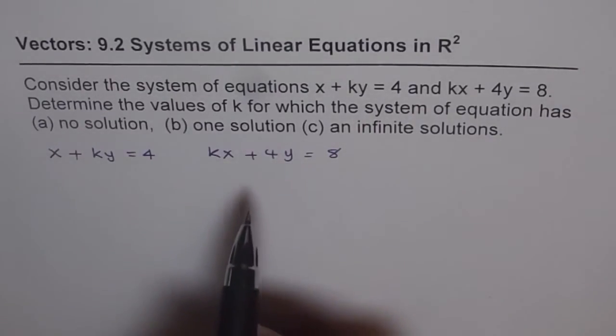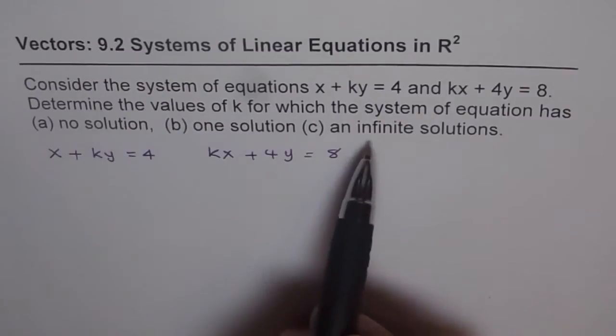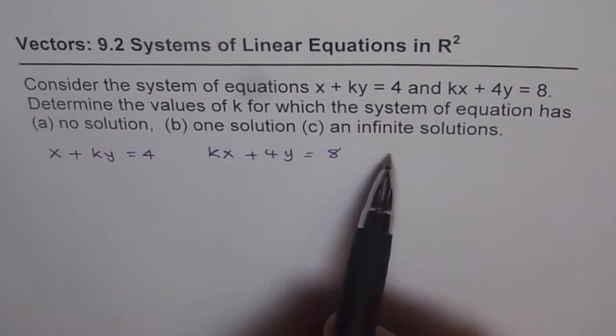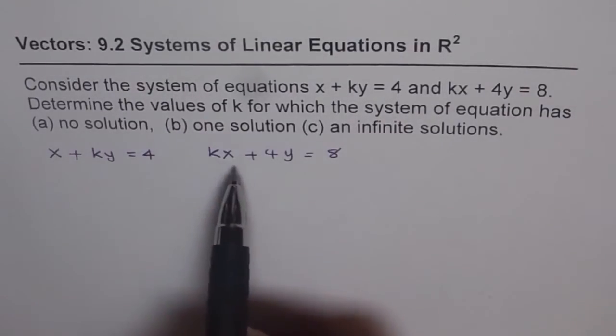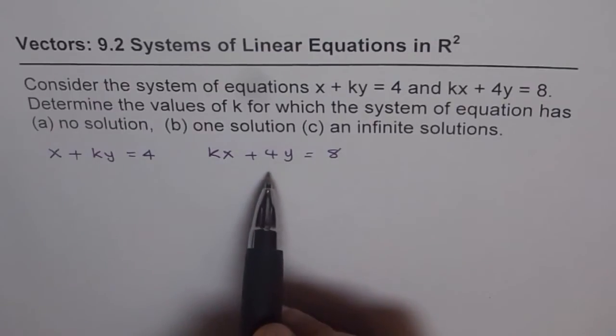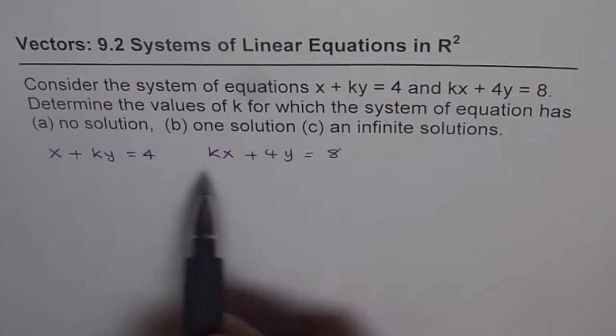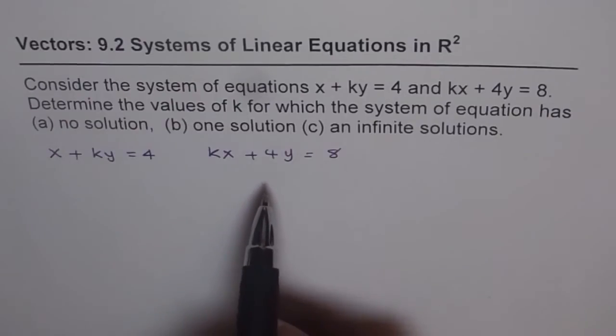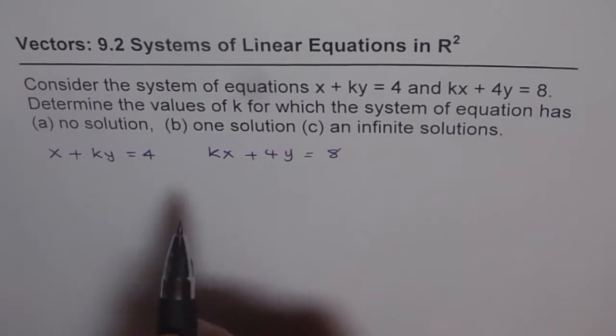We know fairly well that if we are looking for no solution or infinite number of solutions, then we are looking for same direction number. So the direction number for the normal should also be same when we see that the direction numbers are same.